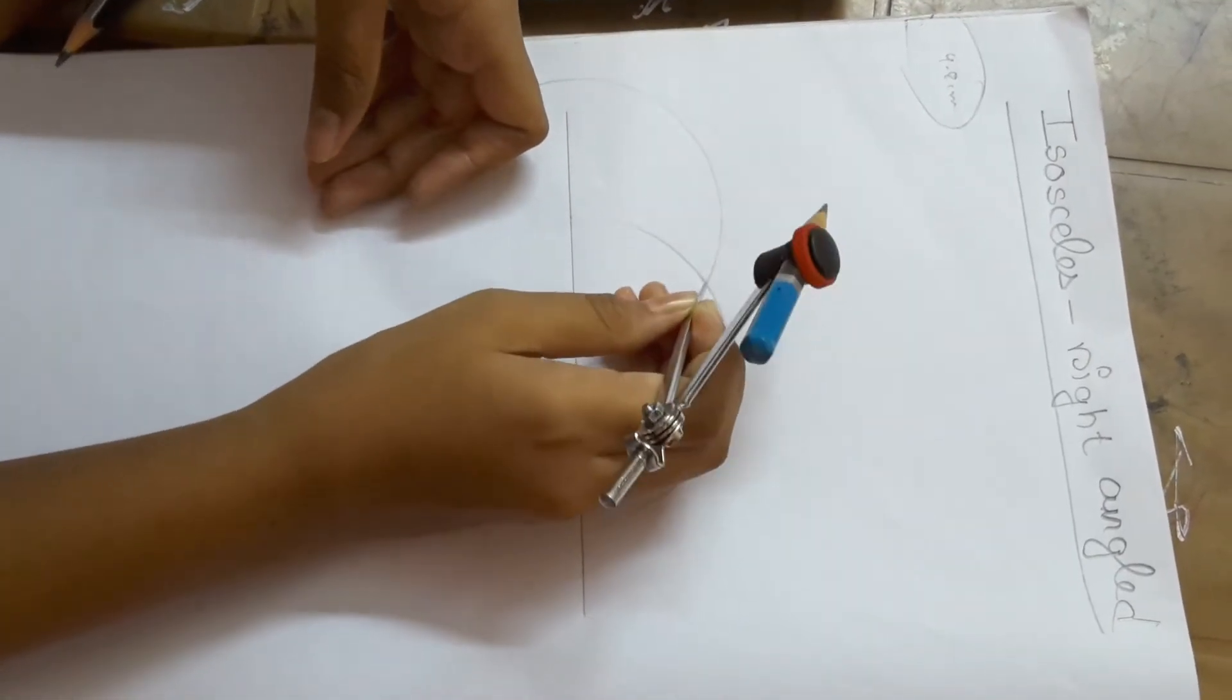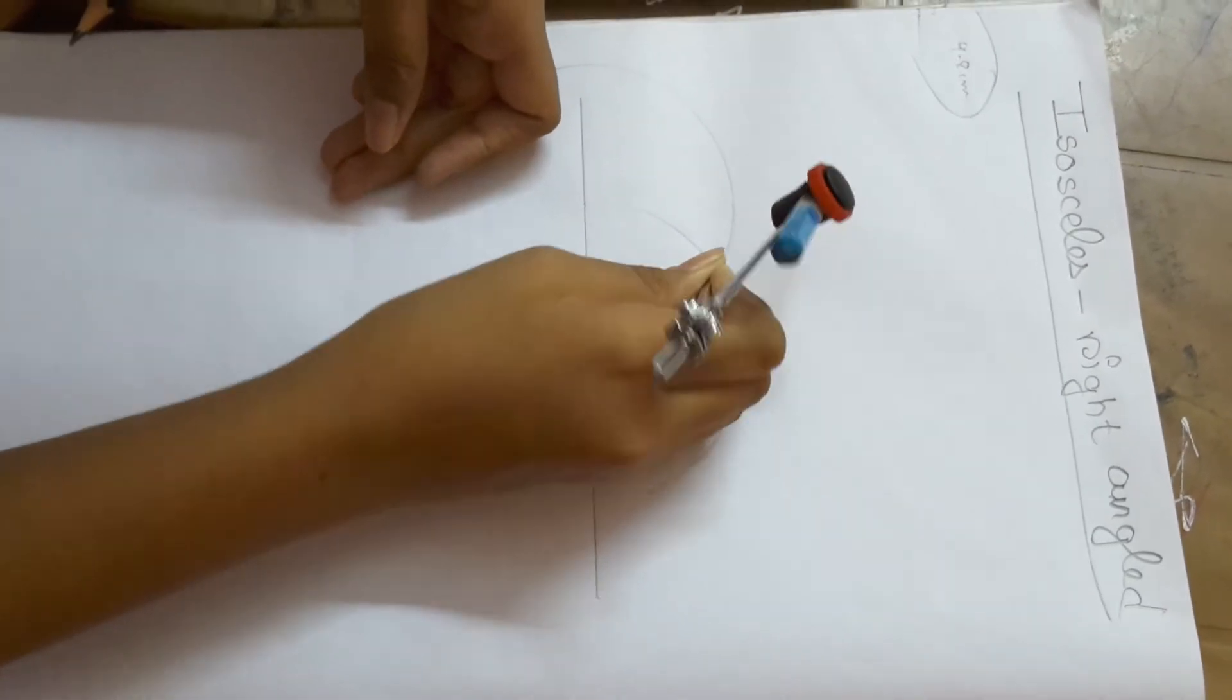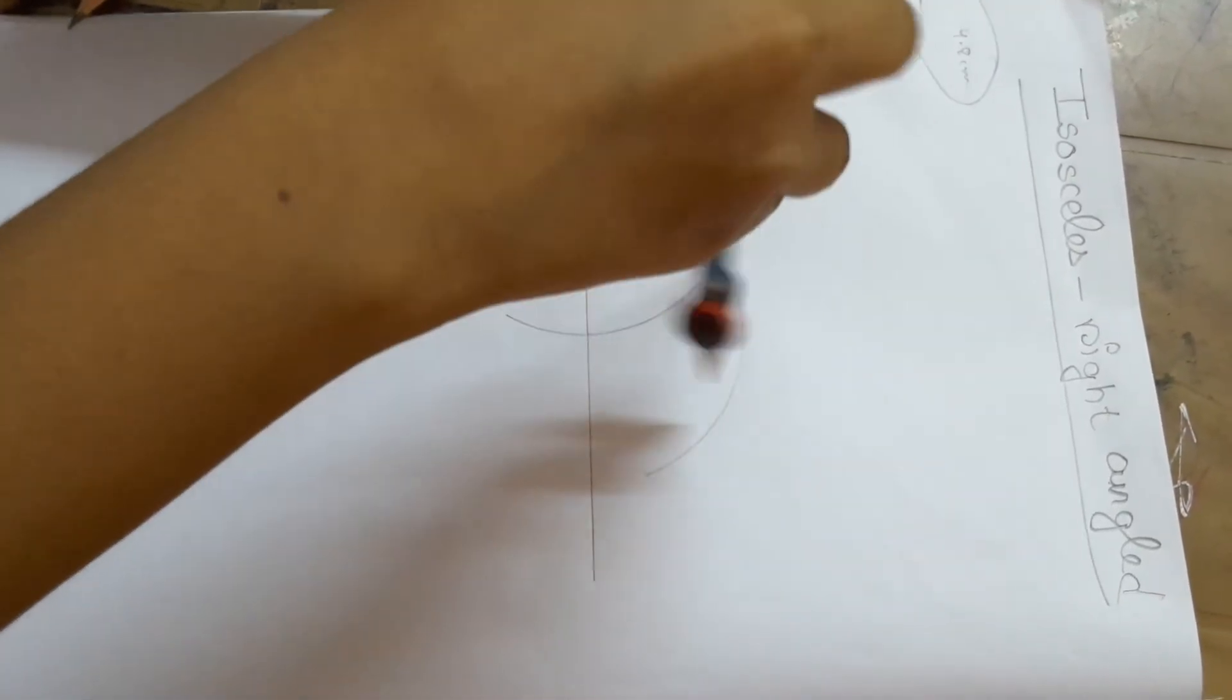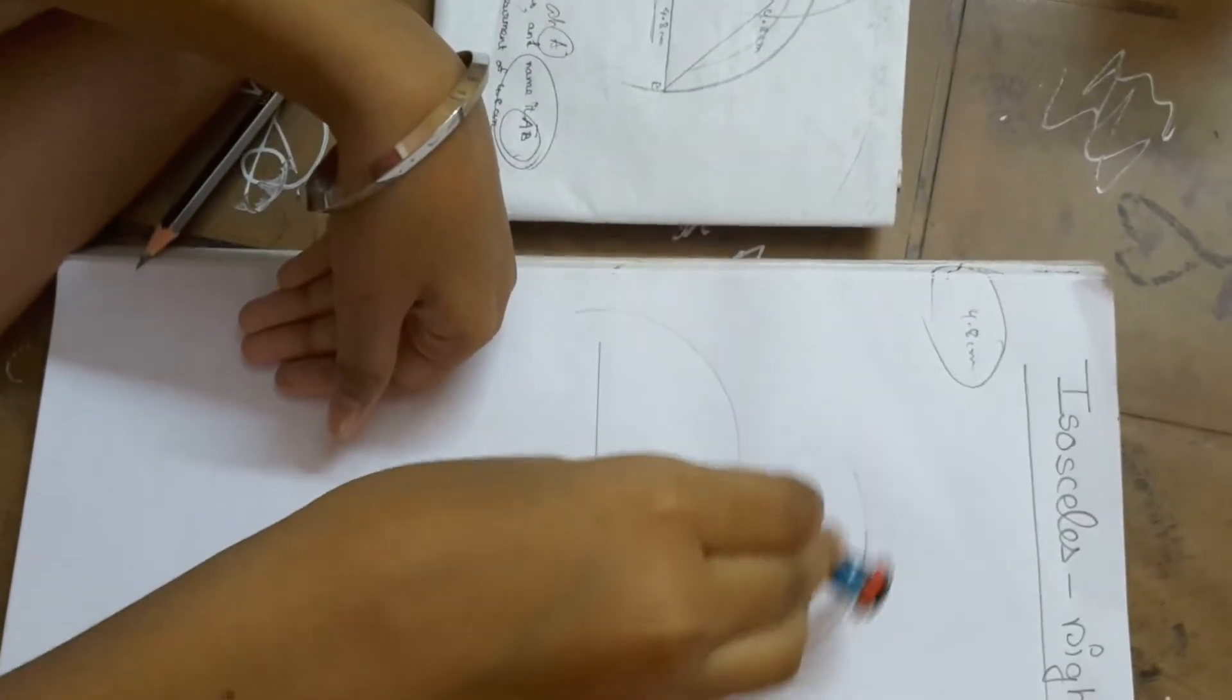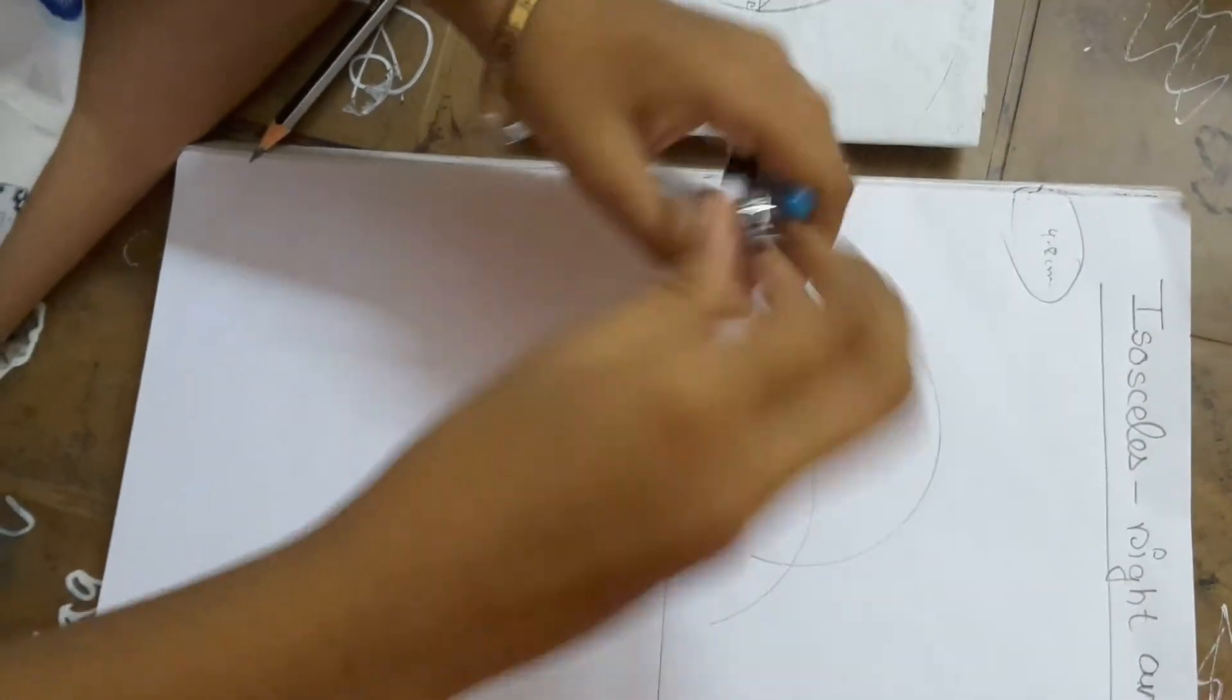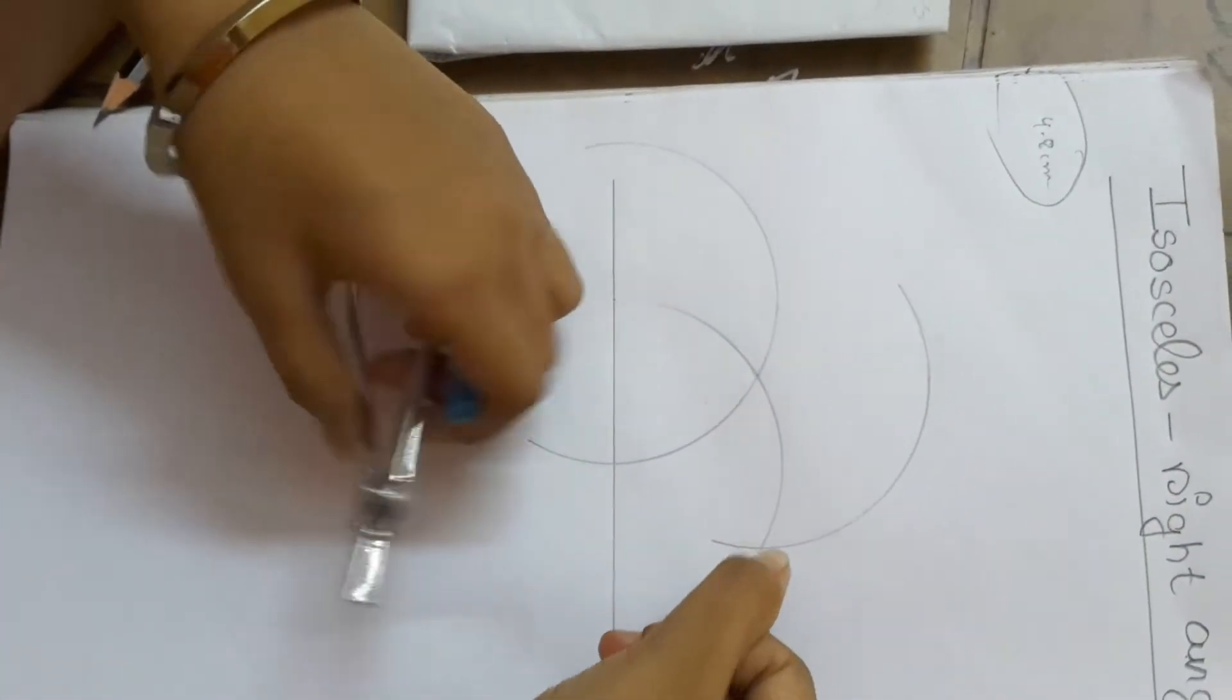Put the compass right here in the point and then again cut. And then cut it. It has cut the arc here again.